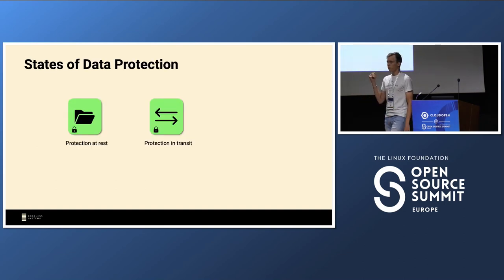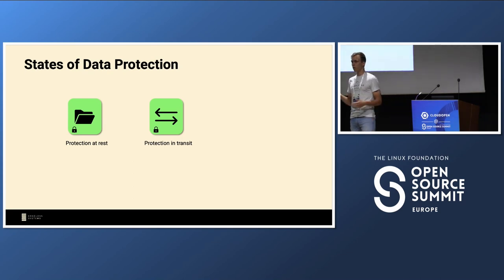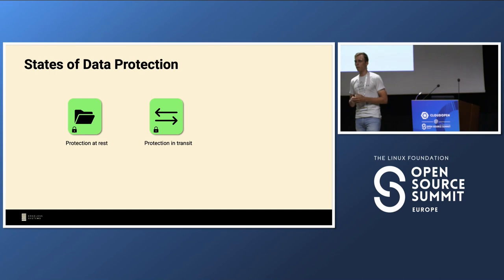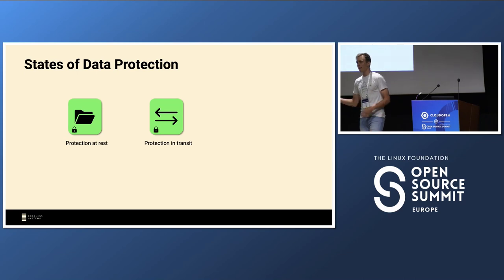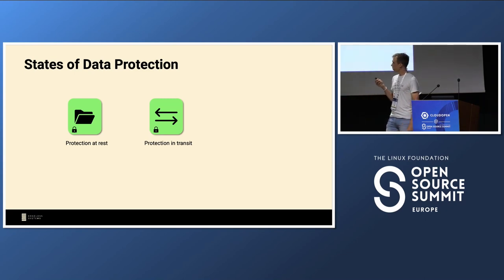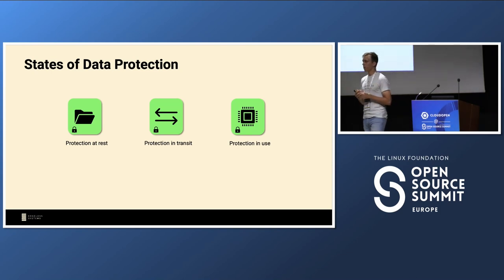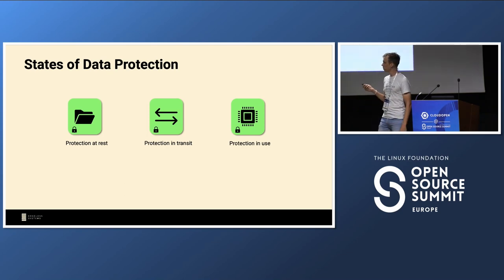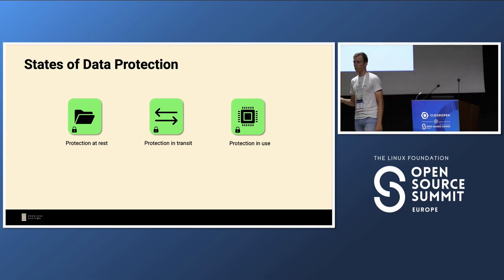If you've heard anything about confidential computing you've probably seen the graphic about the states of data and how we protect it. We can encrypt data at rest, and we have transport encryption for data in transit. Confidential computing fills the gap by protecting data also while it's in use, making it possible for the first time to have real end-to-end encryption or protection of data in all states.